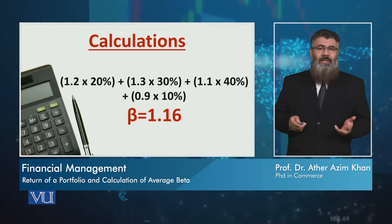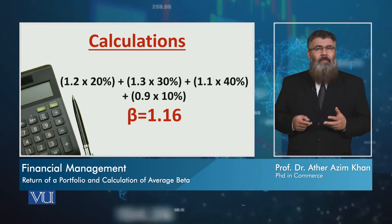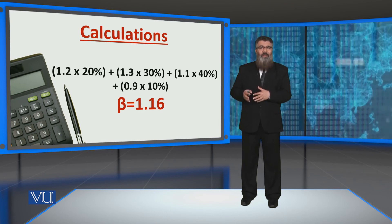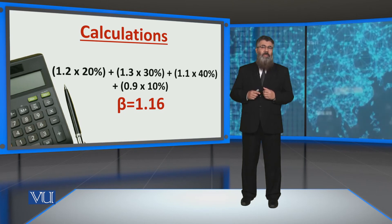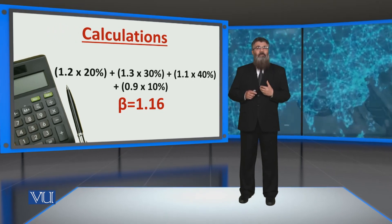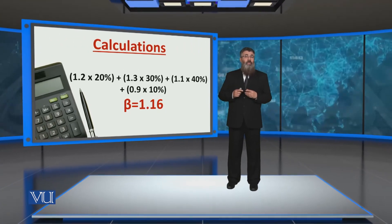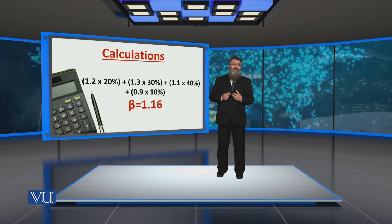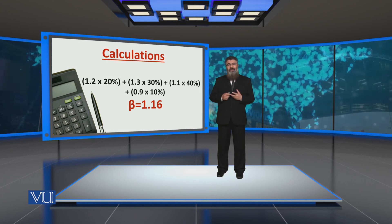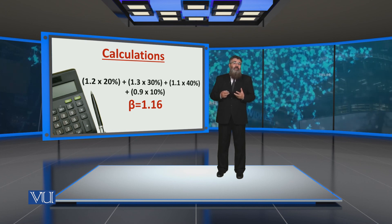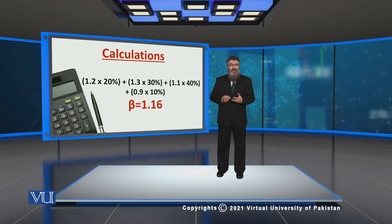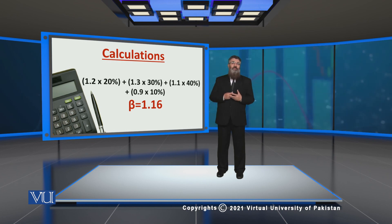To conclude our discussion on portfolio beta: if we have 4 stocks with beta values ranging from a maximum of 1.3 to a minimum of 0.9, the weighted average beta of the portfolio comes out to 1.16. Since 1.16 is greater than 1, the expected return on our portfolio is 16% more than the market return — meaning if the market earns 10%, our portfolio is likely to give us 11.6% return.